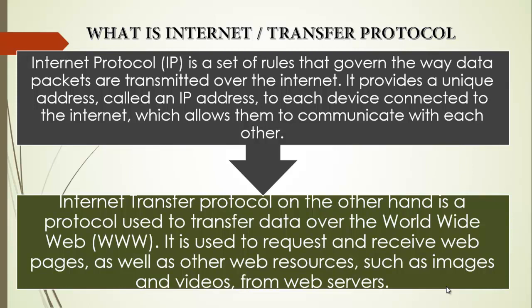For instance, we have the Internet Control Message Protocol, referred to as ICMP, which is used for error reporting and diagnostics on the IP network. ICMP messages report errors such as unreachable hosts or network congestion. We also have the Internet Group Management Protocol, or IGMP, used for managing multicast group membership on IP networks, allowing hosts to join or leave multicast groups. Additionally, we have the Border Gateway Protocol, or BGP, used for routing traffic between autonomous systems on the Internet.